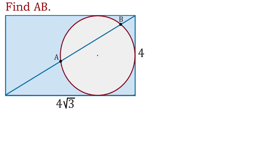Hello. In the given figure we have a rectangle with the sides 4 and 4 square root of 3. Inside we have an inscribed circle and the diagonal of the rectangle crosses this circle at points A and B. Then what is the length of the line segment AB?